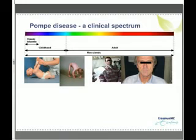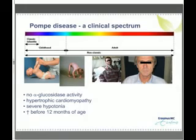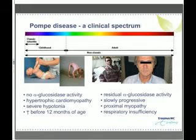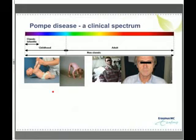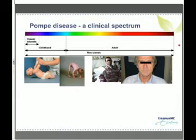Pompe disease has a broad clinical spectrum. At one side lies the classic infantile form — these patients have no alpha-glucosidase activity, suffer from severe hypotonia and hypertrophic cardiomyopathy, and without treatment usually die within the first year of life. At the other side of the spectrum are adult patients who have residual enzyme activity, typically get diagnosed during childhood or adulthood, and have slower disease progression. Proximal muscle weakness and respiratory problems are characteristic for this group.